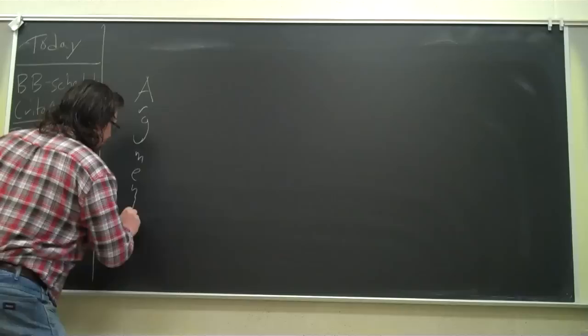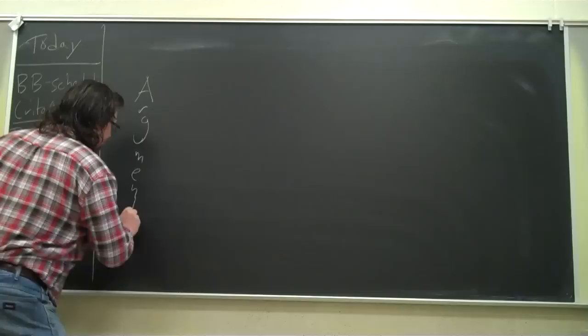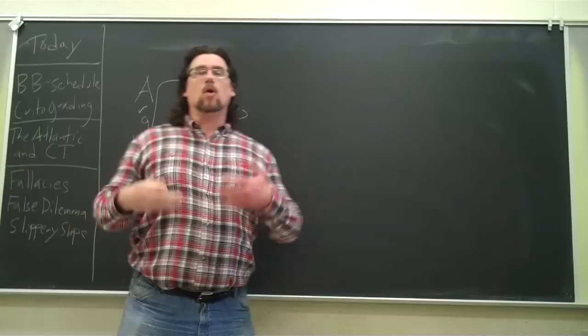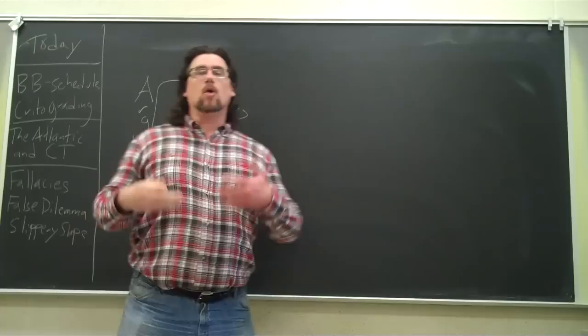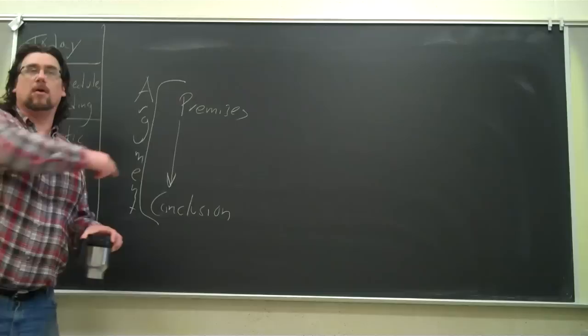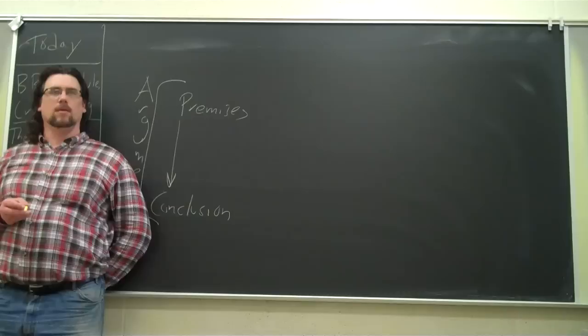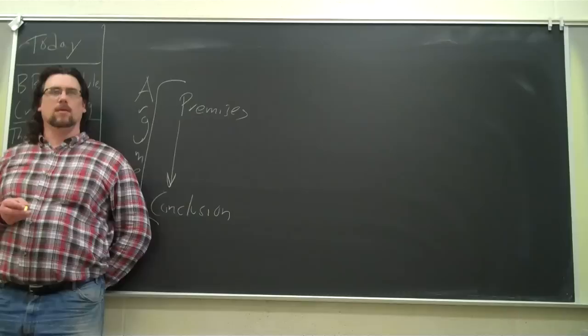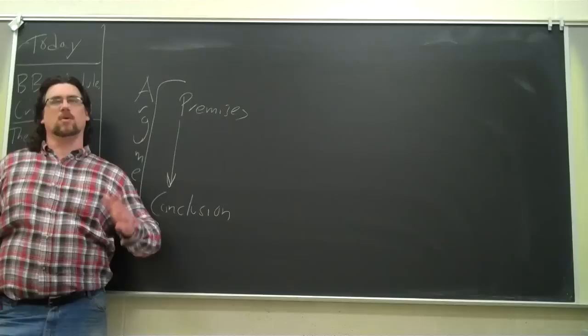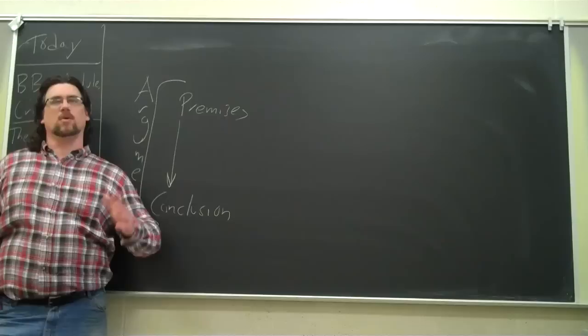Remember we've talked about arguments. We have a conclusion, right, and we have premises. And how can things go wrong in an argument? If we have a fallacy, we have some sort of bad argument. Just to review, how do they go wrong? What goes off the tracks? The premises could be not true. Yeah, premises could be false. That's a big problem, right? And a lot of the fallacies that we're looking at, some of the premises are going to be false.